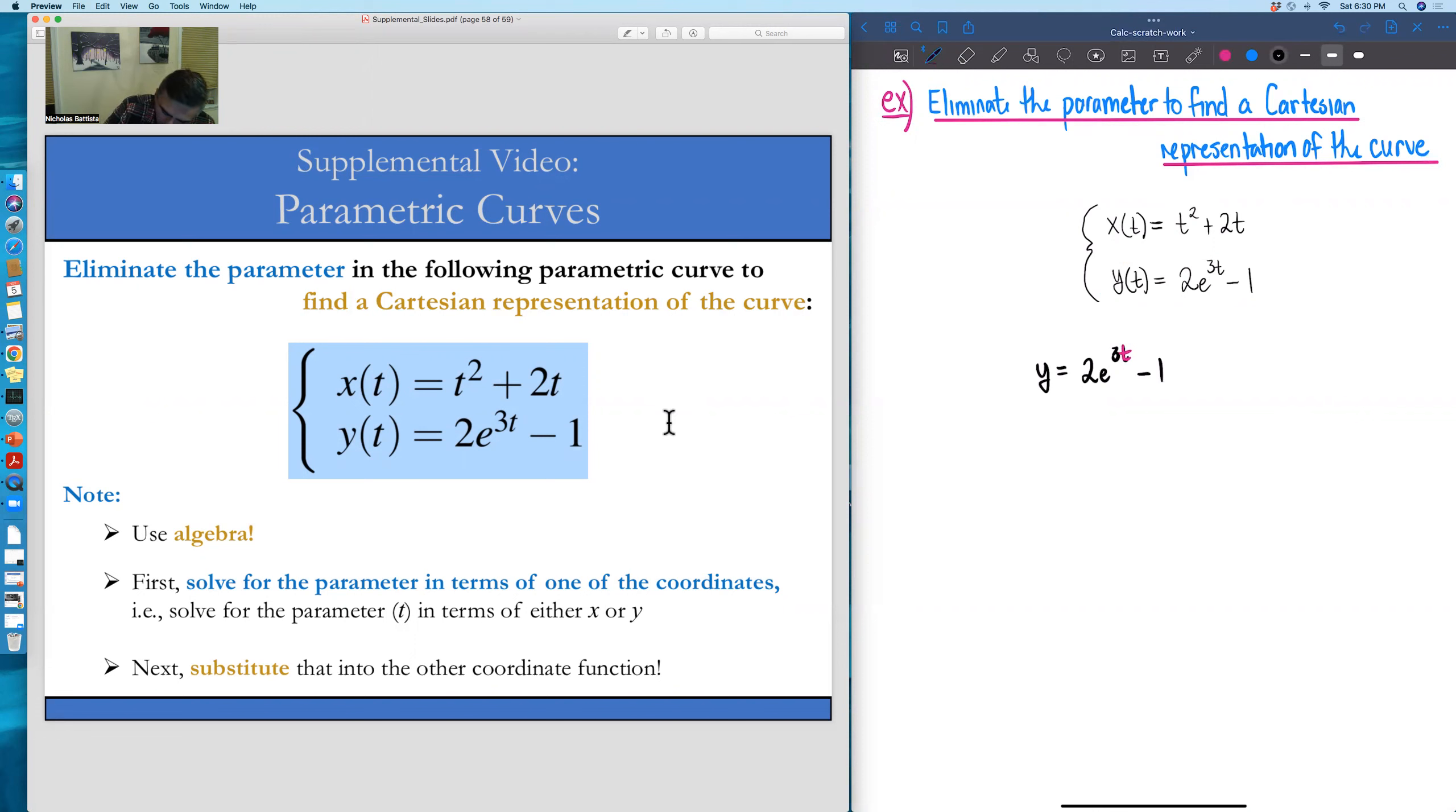So let's start doing that. We can add 1 to both sides. We get y plus 1 is 2e to the 3t. Again, sight set on getting t alone. Next, we can divide both sides of this equation by 2. y plus 1 all over 2 is equal to e to the 3t.